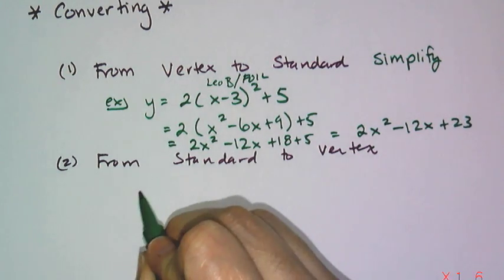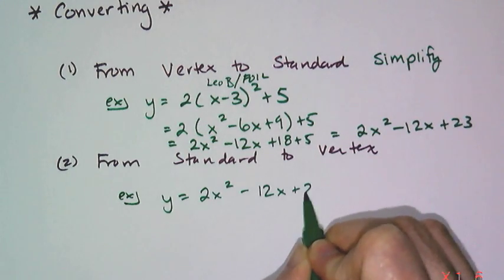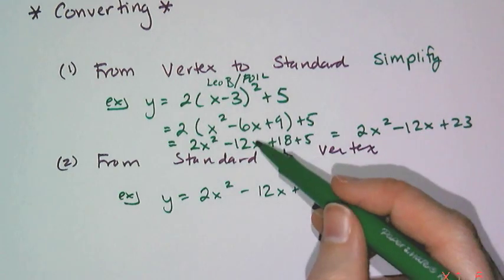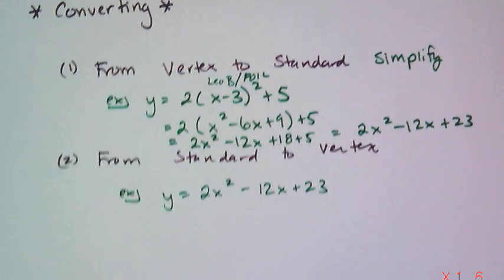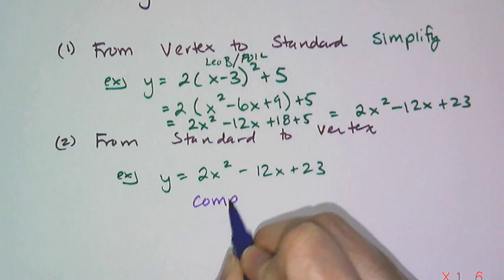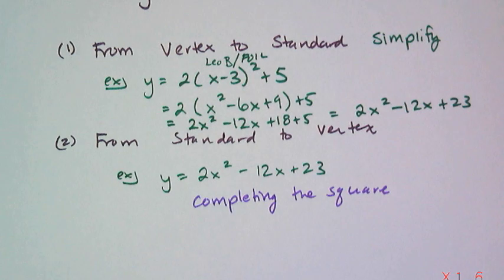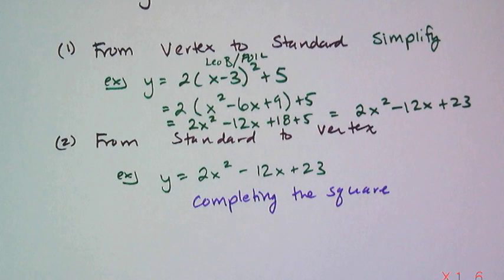Now converting from standard form to vertex, meaning if I give you y equals 2x squared minus 12x plus 23, and I wanted you to find this version, well you'd have to basically do these steps backwards, and that process is called completing the square. And in order to complete the square you have to know about this thing called factoring, so I'm not actually going to do an example of converting standard form to vertex right now, we're going to do that a little bit later after I teach you how to factor.